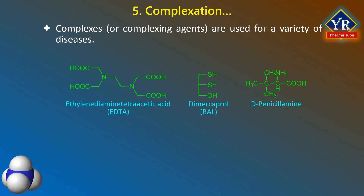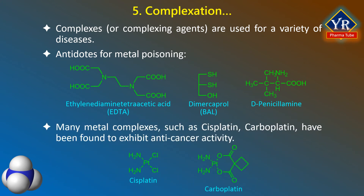Heavy metals are required for certain enzymes and biomolecular components. Complexes and complexing agents are used in a variety of diseases. Chelating agents commonly used to treat metal poisoning are ethylenediaminetetraacetic acid (EDTA), dimercaprol, and penicillamine, which is a degradative product of penicillin. The structure of EDTA contains amine and carboxylic acid groups, which means it readily coordinates with metals such as calcium and magnesium. Both of these elements are essential components of living organisms, and their depletion causes malfunctioning of biological processes and weakening of bone structure. Consequently, EDTA is normally used in the form of its disodium-calcium EDTA salt to reduce calcium depletion.